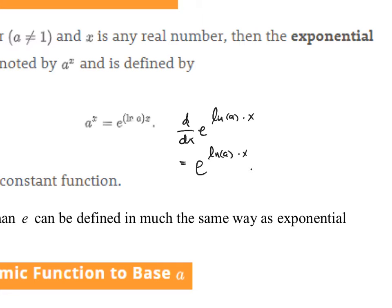Well, the natural log of a is a constant, so the derivative of natural log of a x is simply the natural log of a. And then if you back substitute, this is really a to the x times the natural log of a.